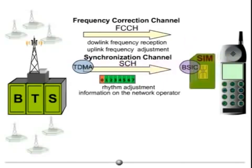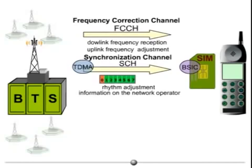After this step, the mobile is able to decide whether it has chosen the proper network. If not, it starts the same procedure again, trying with the second strongest FCCH received.